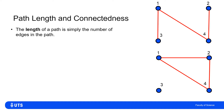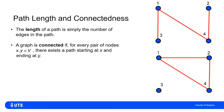We can define the length of a path simply by the number of edges in the path. So the path at the top going from three to two would have path length three, because three to one is one edge, one to four is one edge, and four to two is one edge.